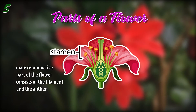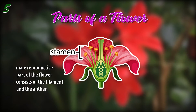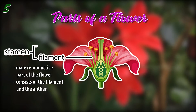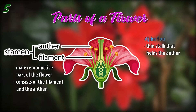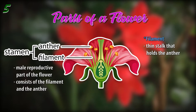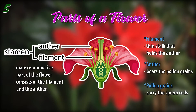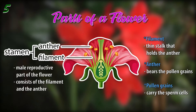The stamen is the male reproductive part of the flower. It consists of the filament and the anther. The filament is the thin stalk that holds the anther. The anther bears the pollen grains, which carry the sperm cells.